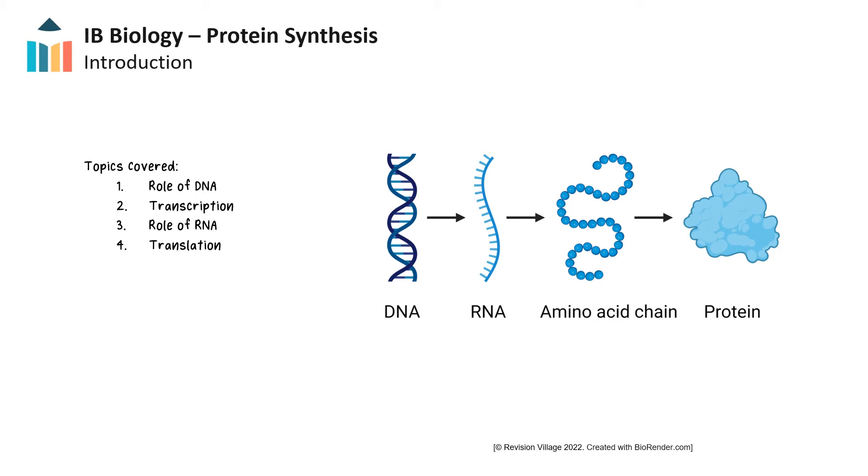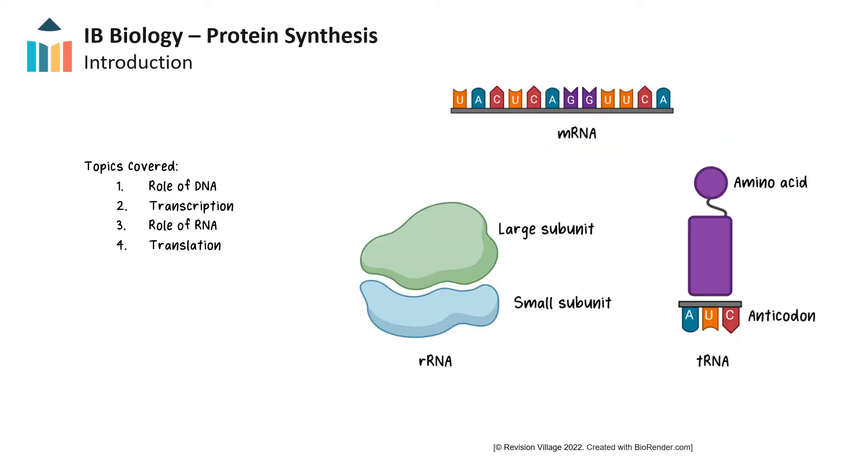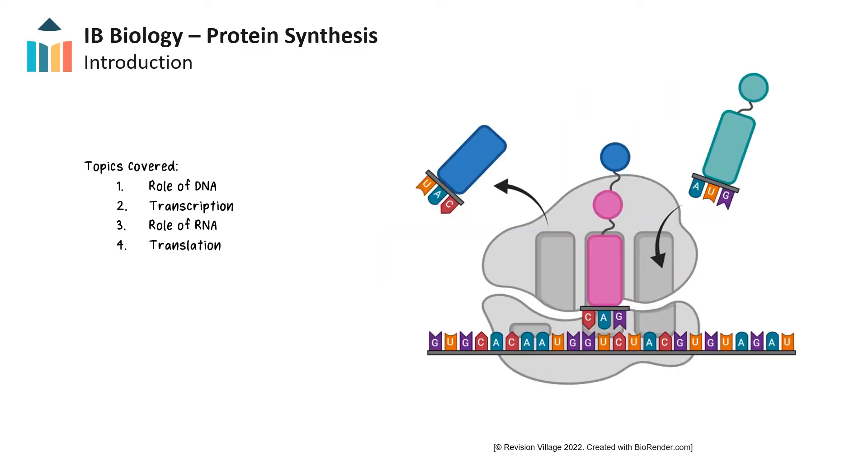This video is about protein synthesis, which uses a sequence of nucleotides to build polypeptides, or proteins, in a cell. This is a key process that occurs in most cell types. The topics in this key concepts video are the role of DNA in protein synthesis, transcription or building messenger RNA from a DNA template, the role of RNA in translation, and the process of translation, which is building a polypeptide using messenger RNA as a template. These key concepts are some of the most important topics covered in the IB biology course.